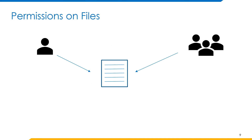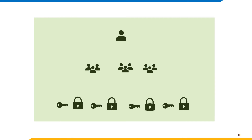UID, GID and permissions work together to control the identity and access of files in Unix. There are two ownerships for every file. Permissions can be assigned to these ownerships, thus specifying what we can do with each of them. The two ownerships are the owning user and the owning group. As a third ownership, we have others, which refers to everyone except the owning user and the owning group. Read, write and execute permissions are assigned to these three ownerships, resulting in a complete access model that establishes a solid IDM layer in Unix.